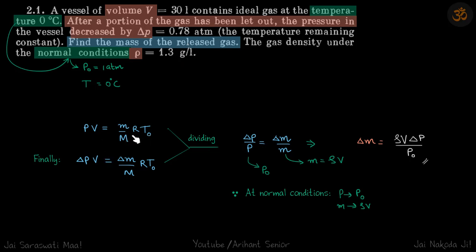We know PV equals nRT, and because the volume of the vessel is constant and temperature is also constant, we can write delta P times V equals delta M over M times R times T_0.